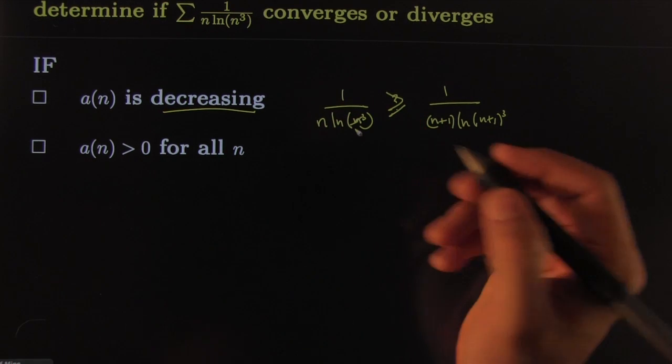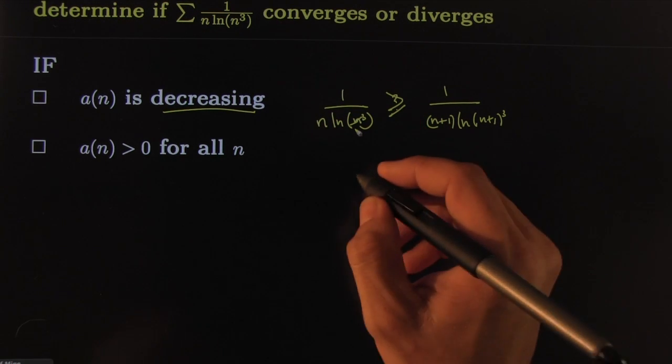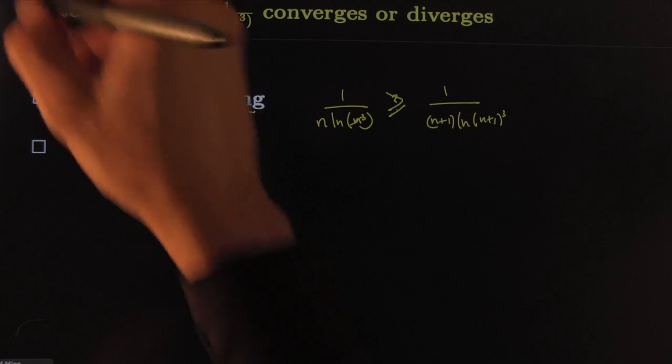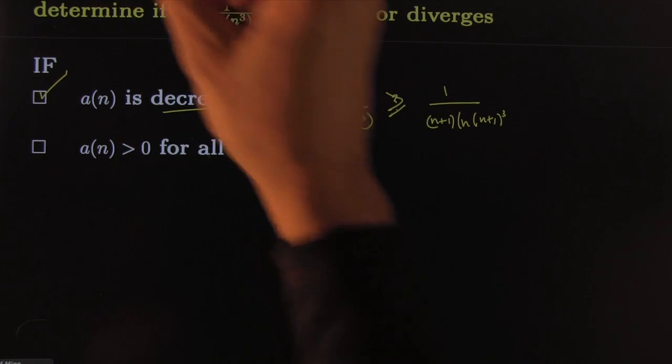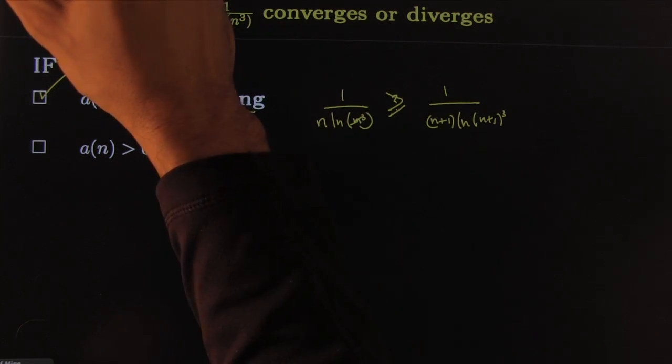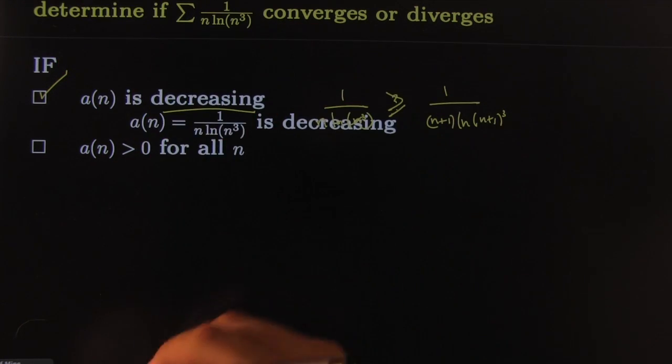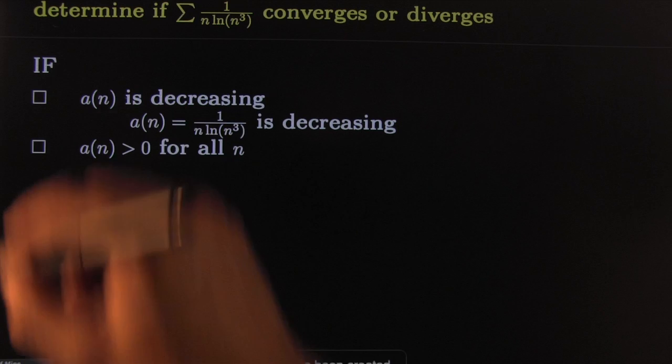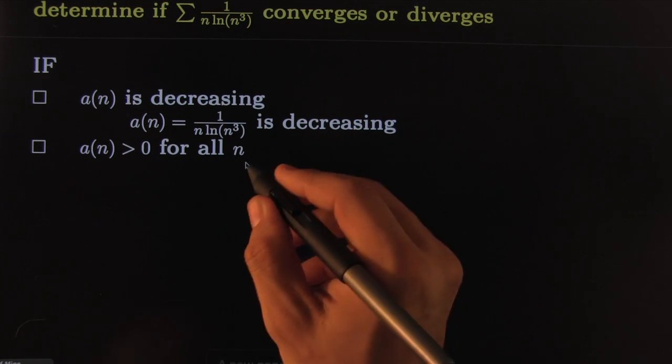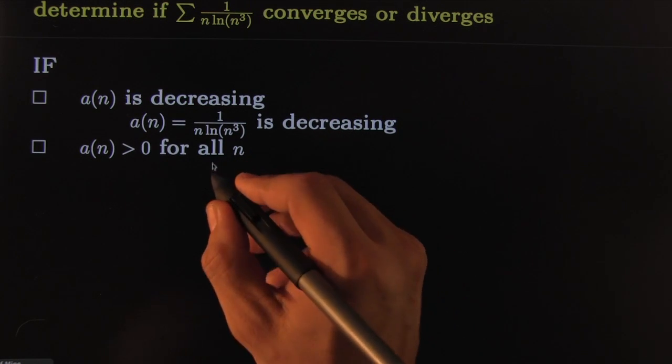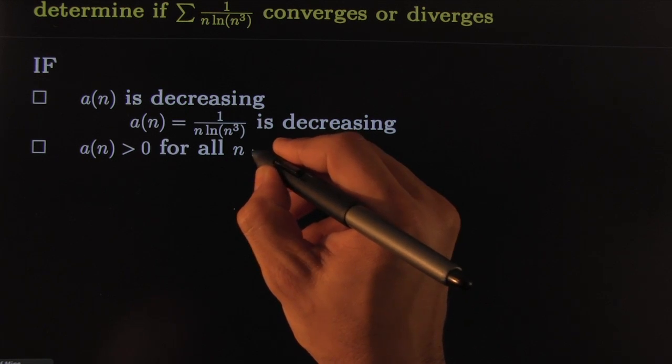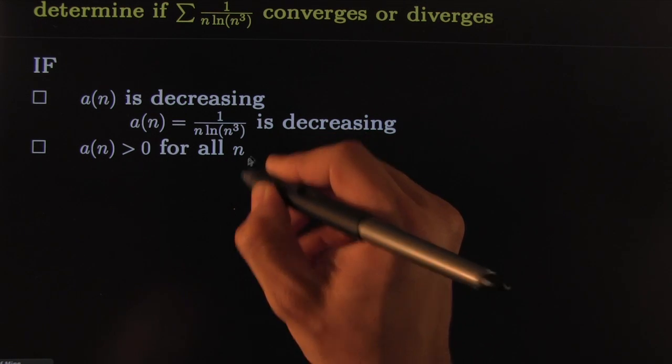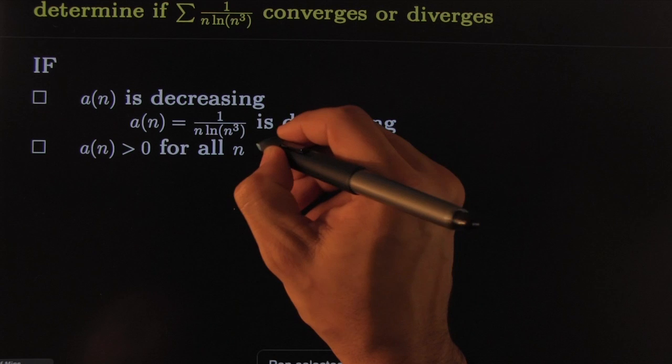So that checks your first condition, it's decreasing. Second condition would have to be that it is positive for all n. Here I should mention it's all the n that we're interested in. You should keep in mind that we're only interested in large n, for sufficiently large n.